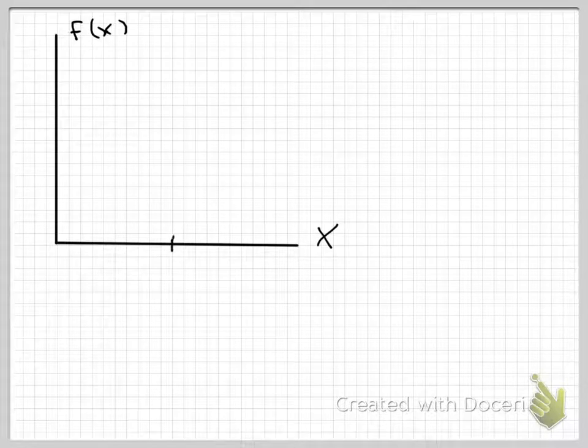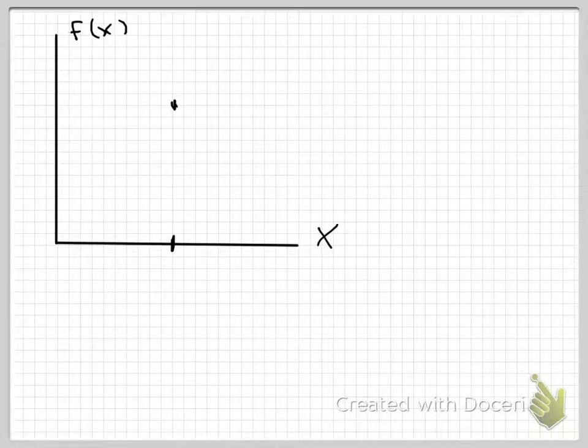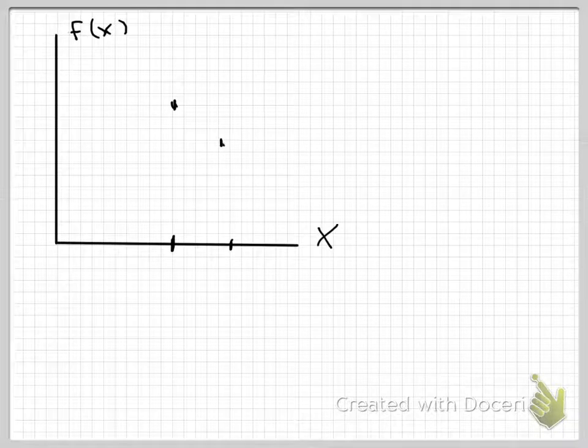Then I have my input variable x, and if I input a particular x, such as maybe this x value here, I get a particular value for my function, which maybe would be there. And if I input this value of x, maybe I would get a value of my function that's there.